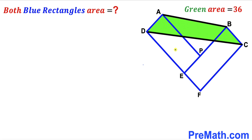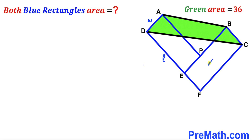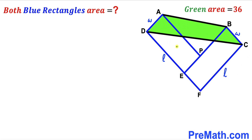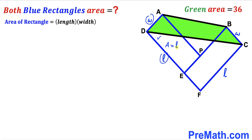Let's focus on this blue rectangle DEPA. I'm going to label the width of this rectangle as W and the length of this blue rectangle as L. Now let's focus on the other blue rectangle EFCB. Since both of these blue rectangles are congruent, side length BC is going to be W and the length of this rectangle is going to be L as well.